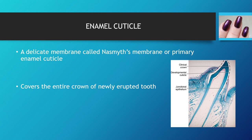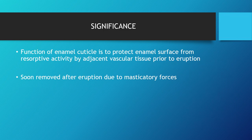Enamel cuticle is a delicate membrane called Nasmyth's membrane or primary enamel cuticle. It covers the entire crown of a newly erupted tooth and wears off with masticatory forces — like nail polish that wears off with use. The significance of the enamel cuticle is to protect the enamel surface from resorptive activity by odontoclasts and osteoclasts during tooth development. After eruption, it is soon removed by masticatory forces.